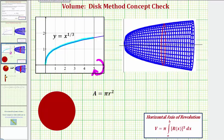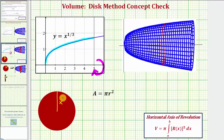The next question is: what would the radius be of our circle, which is one slice of our solid? This length here, which would be the radius, would be equal to the function value y equals x raised to the power of one-third. So the radius is x to the one-third, which means the area of one slice would be A equals pi times x to the one-third, squared.